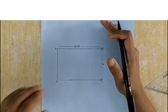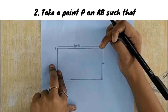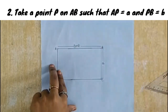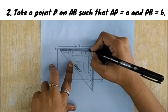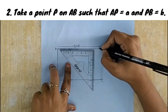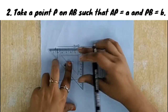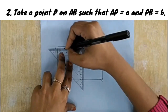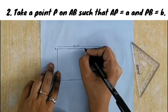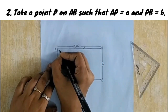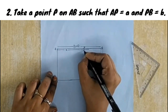Our second step is: take a point P on AB such that AP equals A and PB equals B. We take point P on AB such that AP is 6 cm (which is A) and PB is the remaining 4 cm (which is B). This gives us point P, with length A on one side and length B on the other.